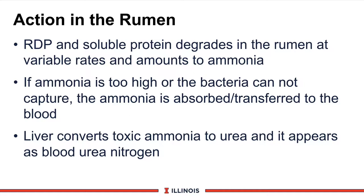This is bad news for the cow, as it will change blood pH. The sentinel organ — in this case the liver — quickly converts this toxic ammonia into urea, which is then secreted into the blood as blood urea nitrogen. That process requires energy, just like any time we synthesize a component in the body.